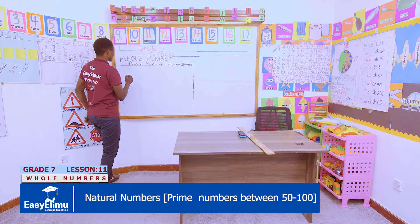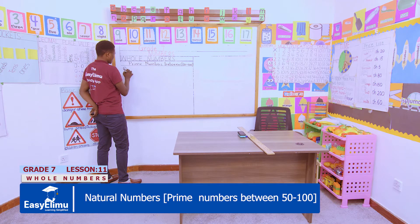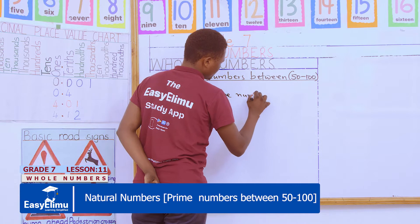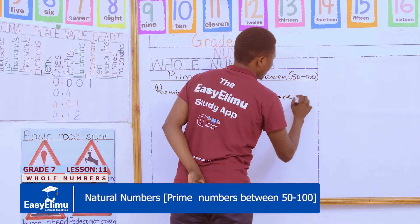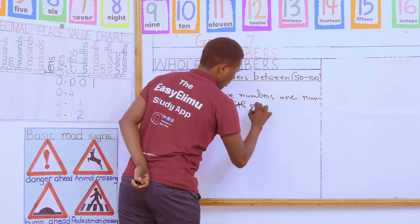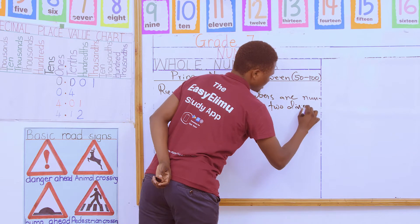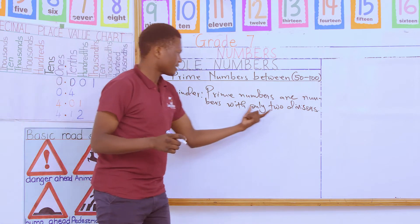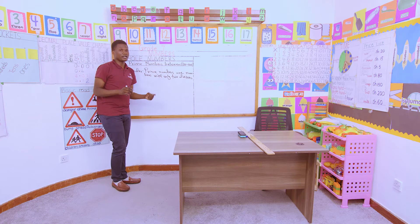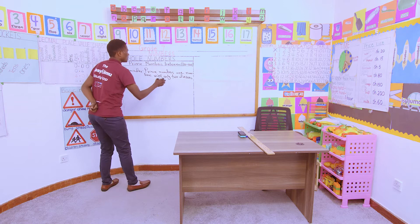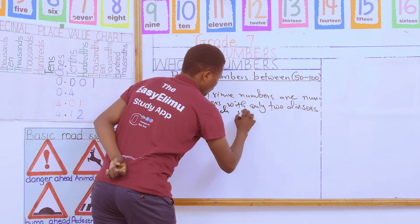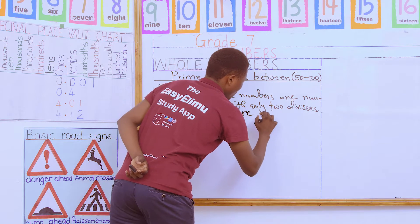Just to remind ourselves of our prerequisite: prime numbers are numbers with only two divisors. In other words, if you express a prime number as a product of its prime factors, or if you highlight the factors of a particular number that is considered to be prime, there will only be two factors.